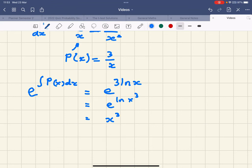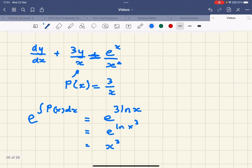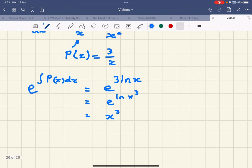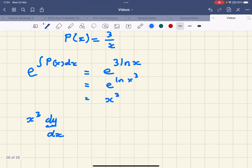Once I've got my e to the power of the integral of P(x), I'm going to multiply through—I'm going to multiply my expression through by x³. So I'm going to have x³ dy/dx plus 3yx² equals e^x.